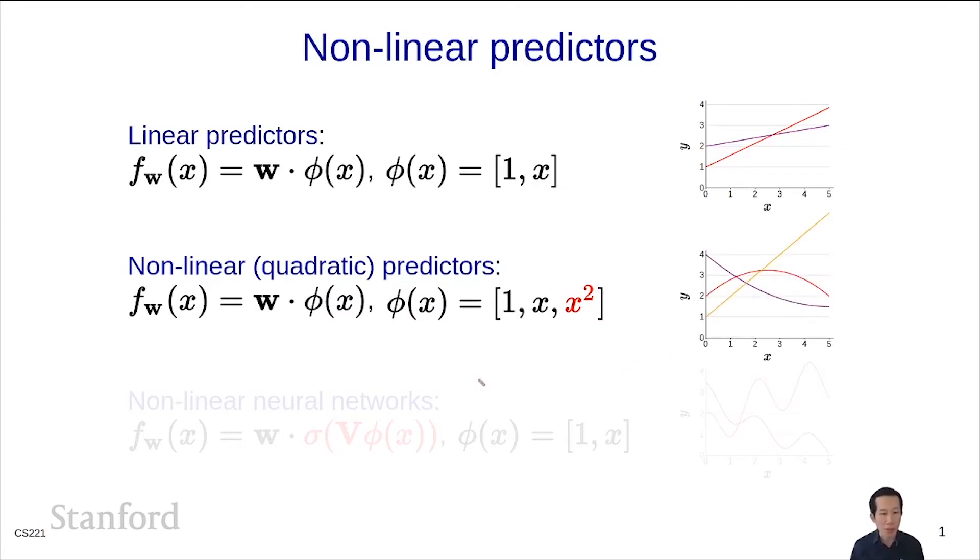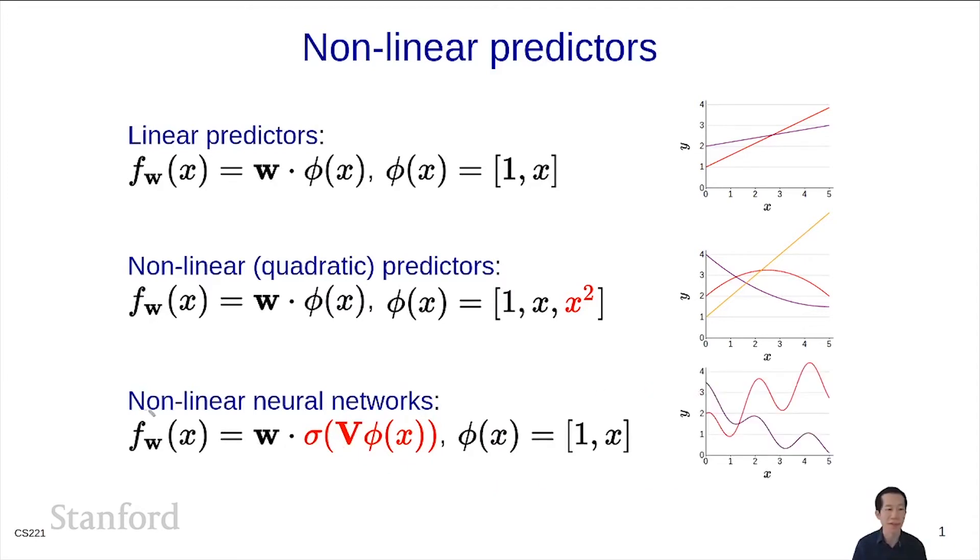Now what we're going to do is define neural networks where we can leave φ(x) alone, the feature vector alone, and play with the way that the feature vector results in the prediction. That'll allow us to get all sorts of fancy stuff.